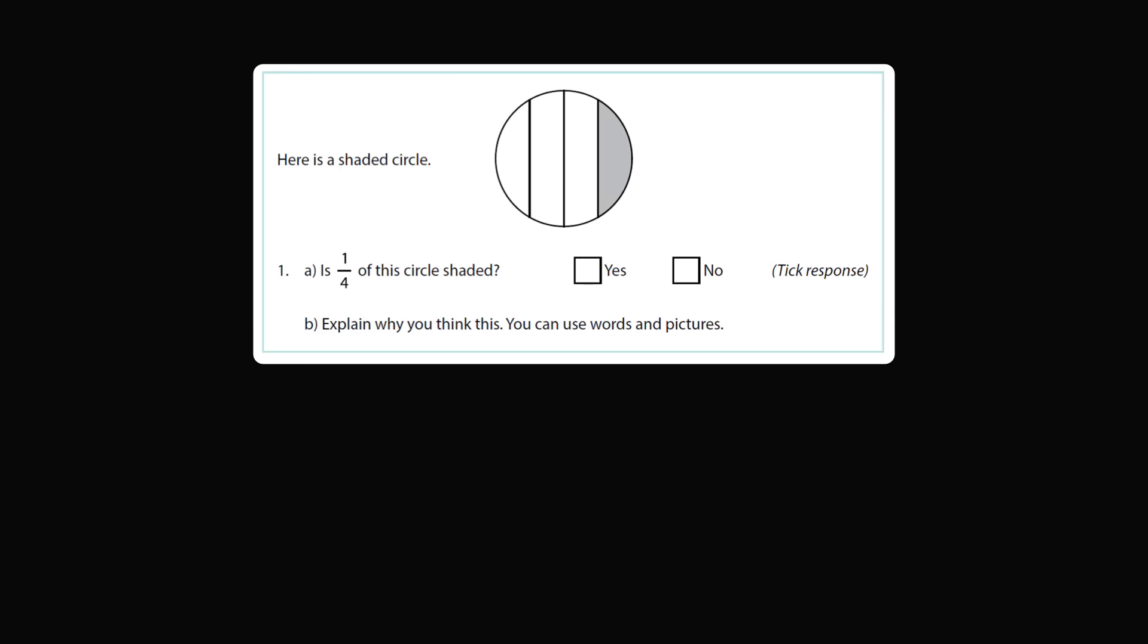So what's the answer to this question? Without a doubt, the correct answer is no. One-fourth of this circle is not shaded. Yes would be an incorrect response. So how did students do?